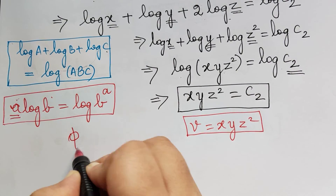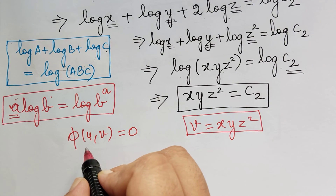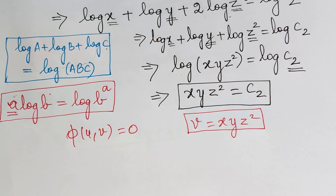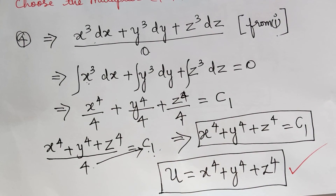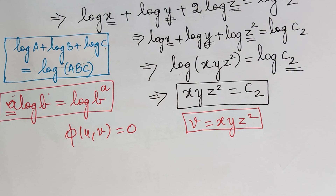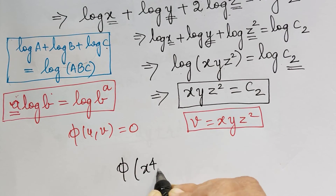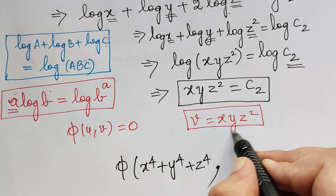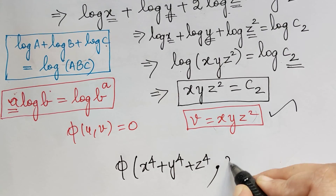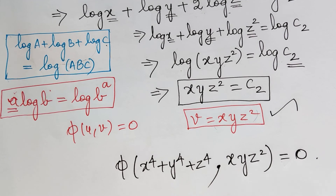Now we can write the general solution φ(U, V) = 0. Substituting U = x⁴ + y⁴ + z⁴ and V = xyz², the general solution is φ(x⁴ + y⁴ + z⁴, xyz²) = 0. Hope you have understood this problem. Thank you.